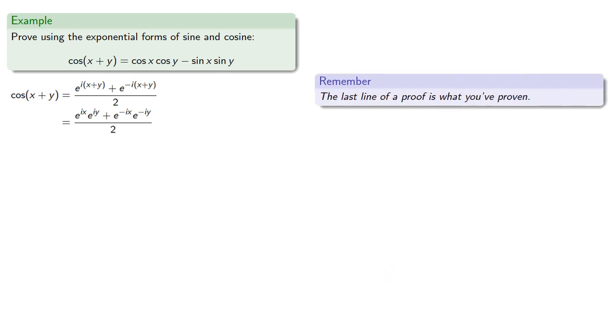Now remember the last line of a proof is what you've proven. We want to get cosine x cosine y minus sine x sine y. So let's write that as our last line and hope we can get there.